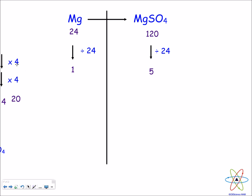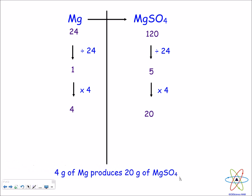Now we need to scale it up to the 4 grams the question was asking for. Multiply the 1 by 4, that gives us 4, and then multiply the 5 by 4 as well, and that gives us 20. So our final answer is 4 grams of magnesium produces 20 grams of magnesium sulfate.